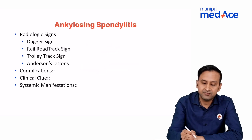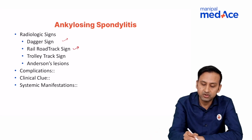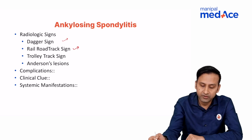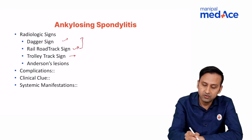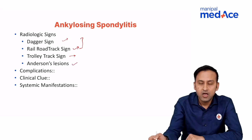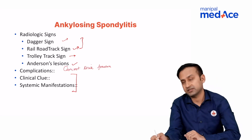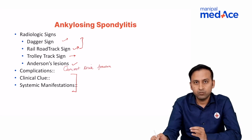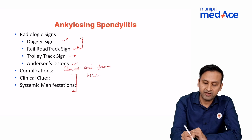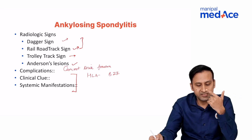To revise: ossification of the interspinous ligament = dagger sign; ossification of intertransverse ligaments = railroad track sign; both together = trolley track sign; paradiscal end plate involvement = Anderson's lesions; brittle bamboo spine = carrot stick fractures. The most important clinical clue given in examinations is HLA-B27. In rheumatoid arthritis the clue is RA factor, but in ankylosing spondylitis it is HLA-B27.